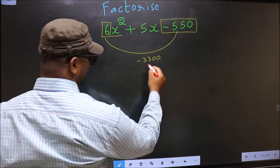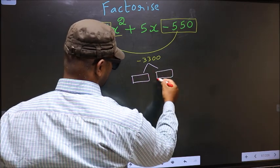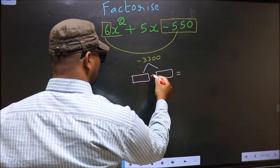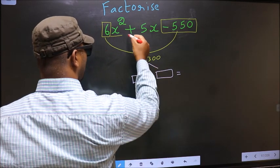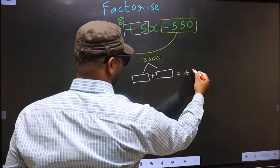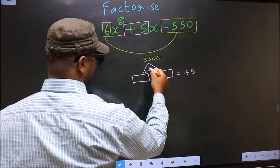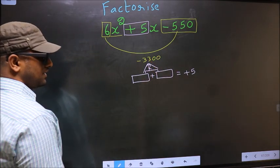Next, now you should look out for 2 numbers such that when you add these 2 numbers you should get middle coefficient plus 5, and also when multiplied you should get minus 3300.